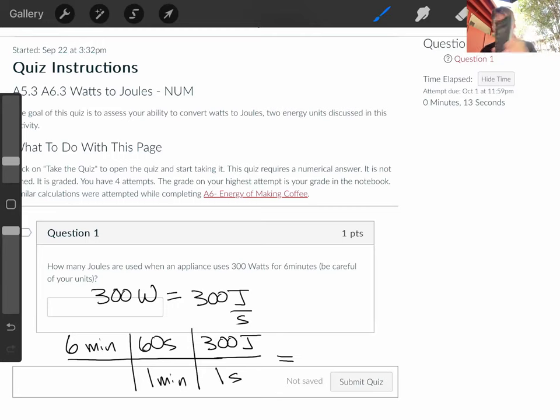Now I'm going to take my calculator, and we're going to do 6 times 60. Remember, it's multiply all the numbers across the top, divide by all the numbers on the bottom. Since the numbers on the bottom are all ones, then dividing is easy. 6 times 60 times 300, I get 108,000 joules.